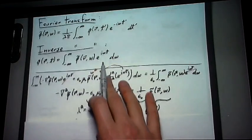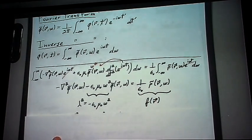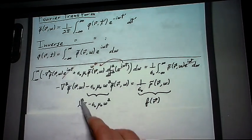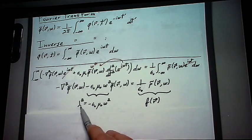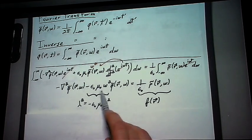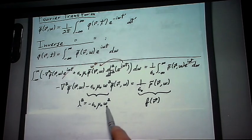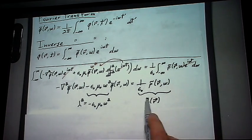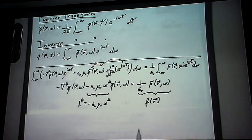So we can actually simplify this quite a bit. What we're going to do is make a variable lambda squared equal to minus epsilon naught mu naught omega squared. Why minus? I'll explain that in just a bit. And to simplify the right side here, we'll just make it equal to some function of r.